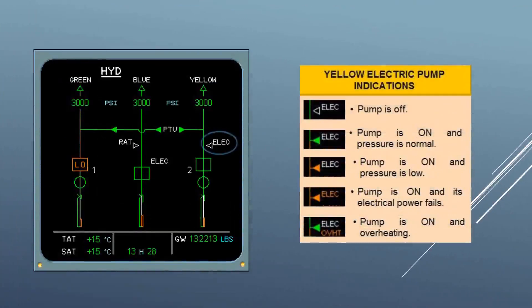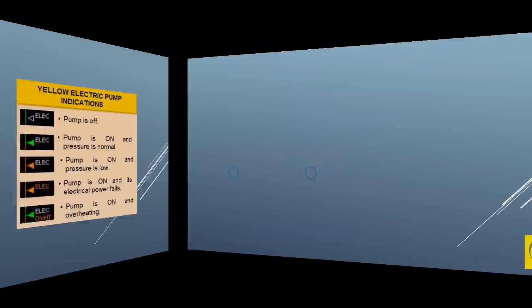Electric pump indication displays white if the pump is off. It displays green when the pump is on and the pressure is normal. Indication becomes amber if the pump is on and the pressure is low, or the associated power supply fails when the pump is on.